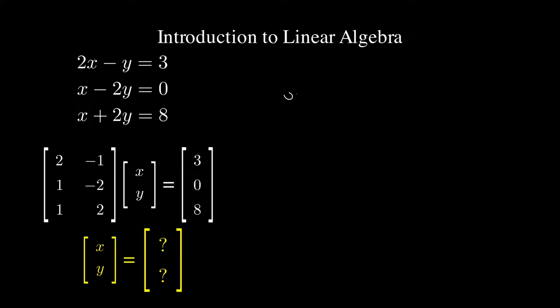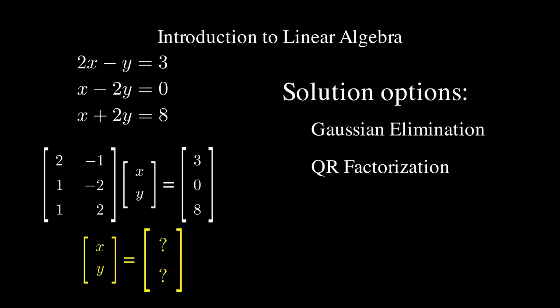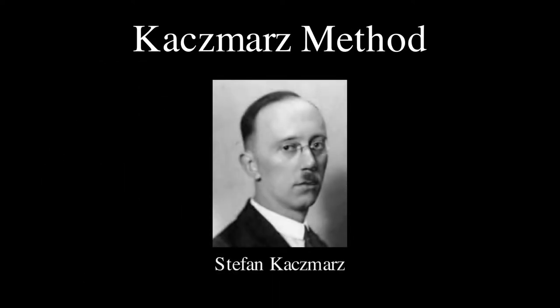We have a few options for approximating this solution. A couple common ones are Gaussian elimination and QR factorization. And today I'm introducing you to a new one called Kaczmarz method. The Kaczmarz method is named after the Polish mathematician who discovered it, Stefan Kaczmarz.